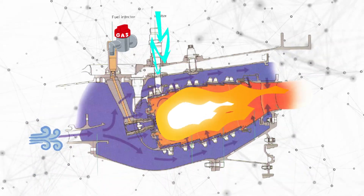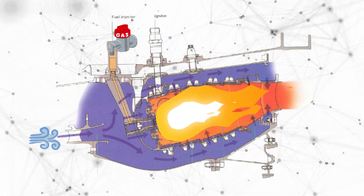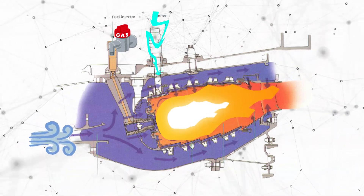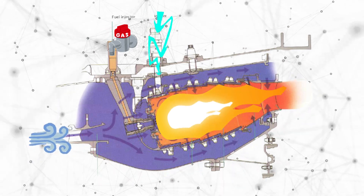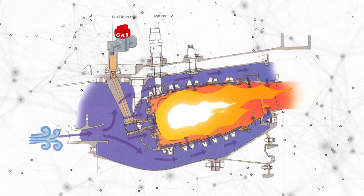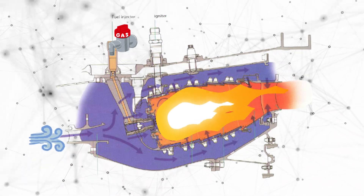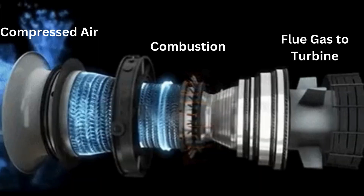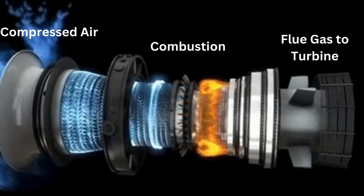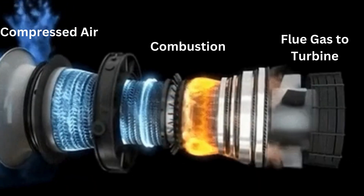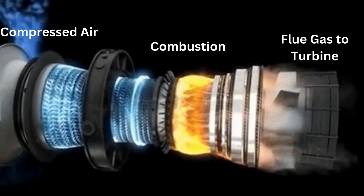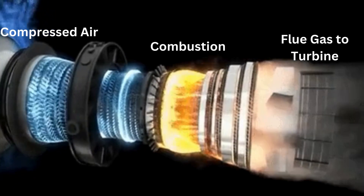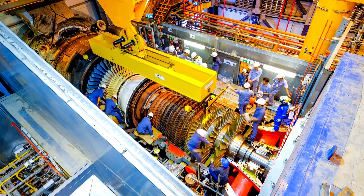The combustor facilitates combustion in primary, secondary and dilution zones. Designs include annular, can-annular and silo types. Turbine Inlet Temperatures (TITs) can reach up to 1,700 degrees Celsius, managed by superalloy blades and advanced cooling technologies. Real combustors also experience pressure and temperature losses, impacting overall efficiency.